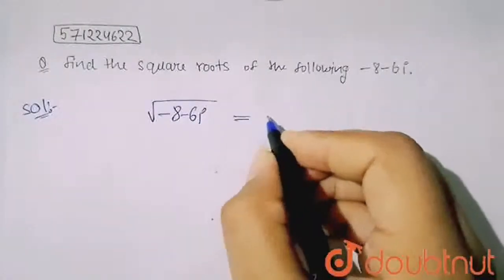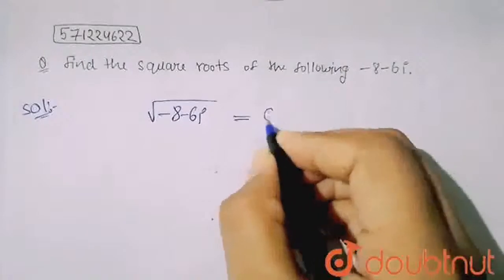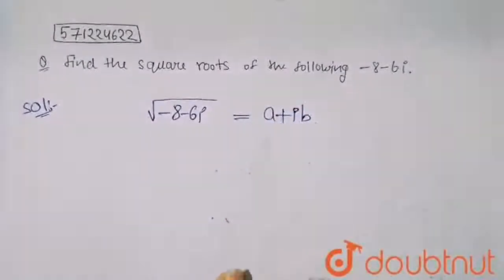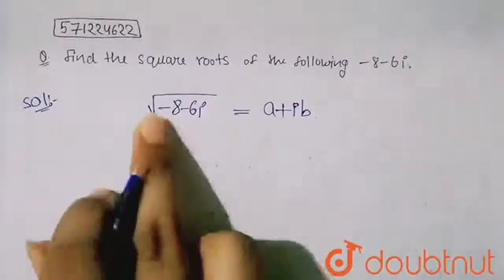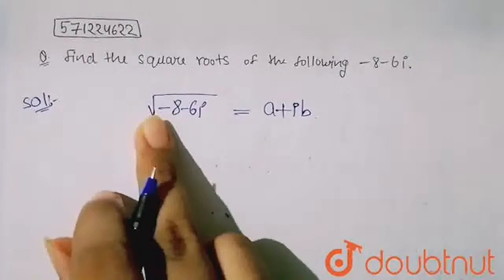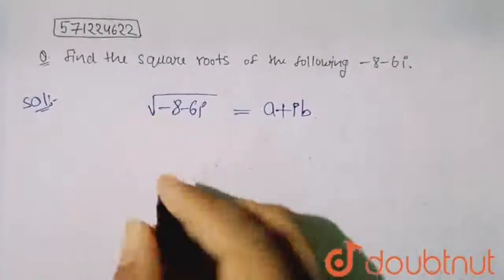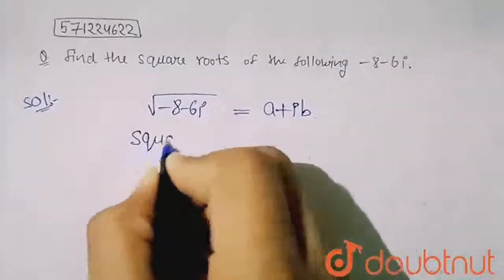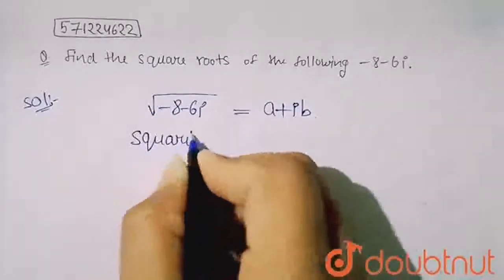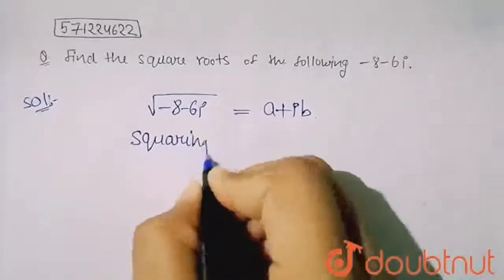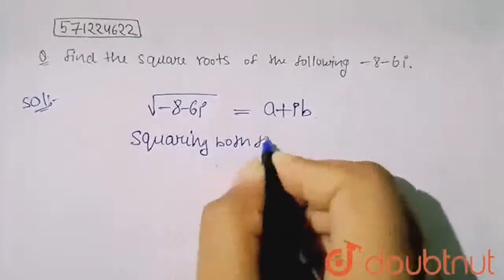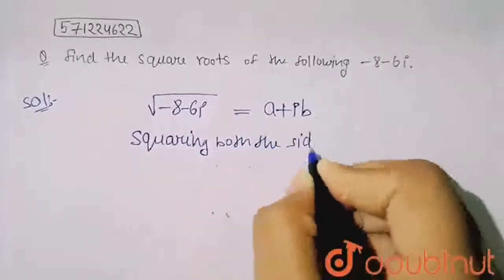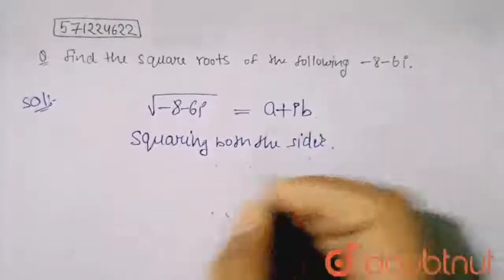So it is equal to what? I am taking a complex number. Let's say A plus iota B. Now what I will do here — squaring both the sides.